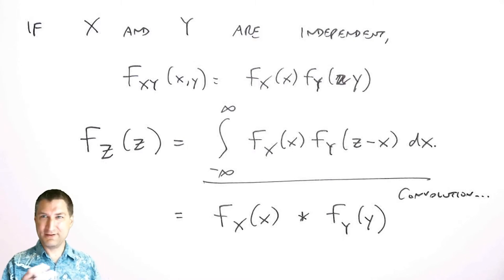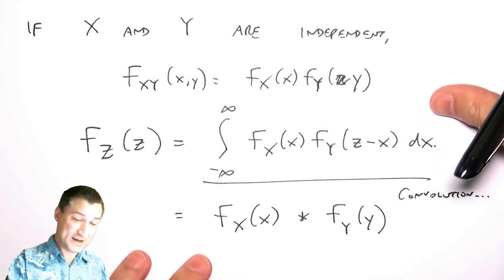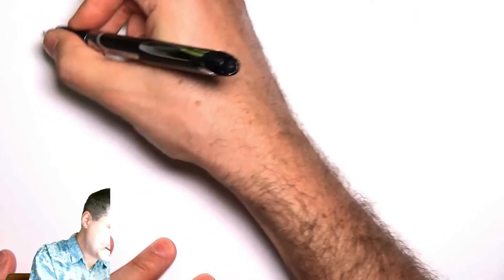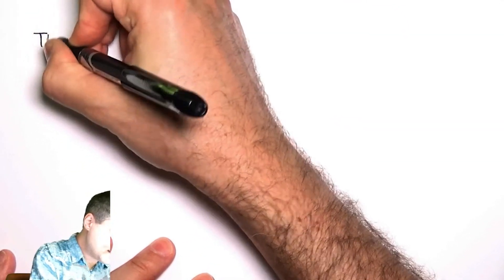So that should also set off some warning bells in your mind saying, well if I have a convolution in the time domain, then there must be a frequency domain version of this. And so it's true that you can start to simplify things involving sums of random variables when you consider the Fourier transform of the PDF. I'm not going to talk about this too much in these lessons, but just to say that these kinds of problems.